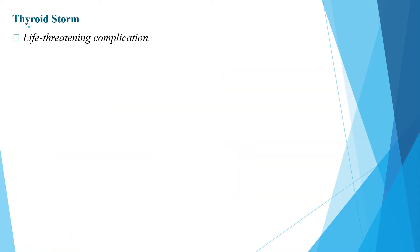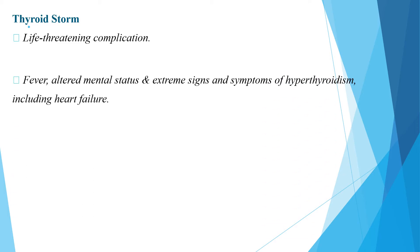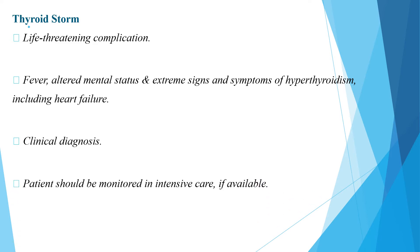A child with Graves disease can develop thyroid storm, which is a life-threatening complication due to sudden release of excessive thyroid hormone. It is characterized by fever, altered mental status, extreme signs and symptoms of hyperthyroidism including heart failure. It is diagnosed clinically but confirmed by thyroid function tests, and the patient should be monitored in intensive care.